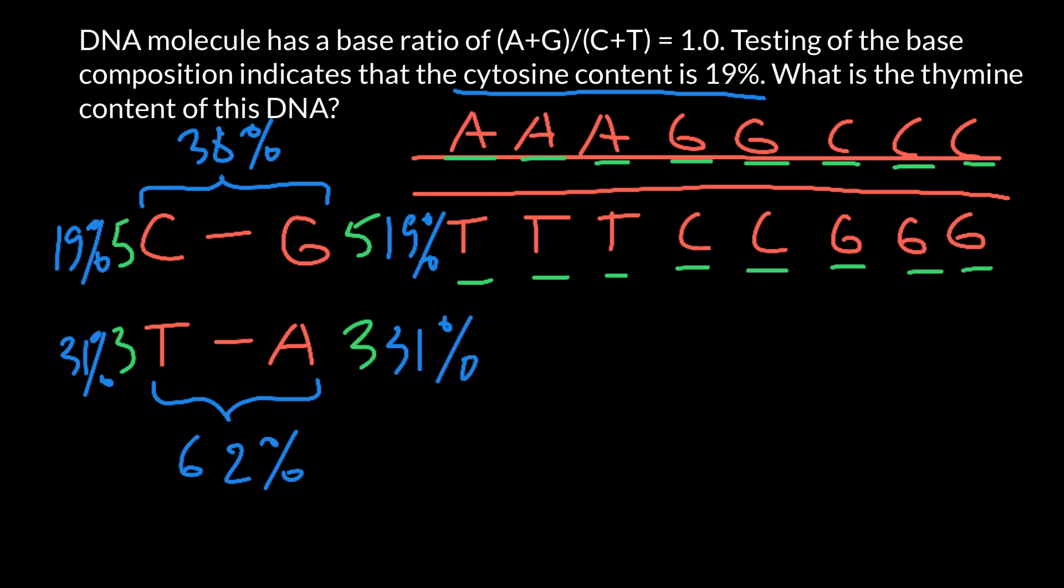And this also means that 31% would be thymine and 31% would be adenine. So our question: what is the thymine content of the DNA? And here is going to be our answer: 31%.